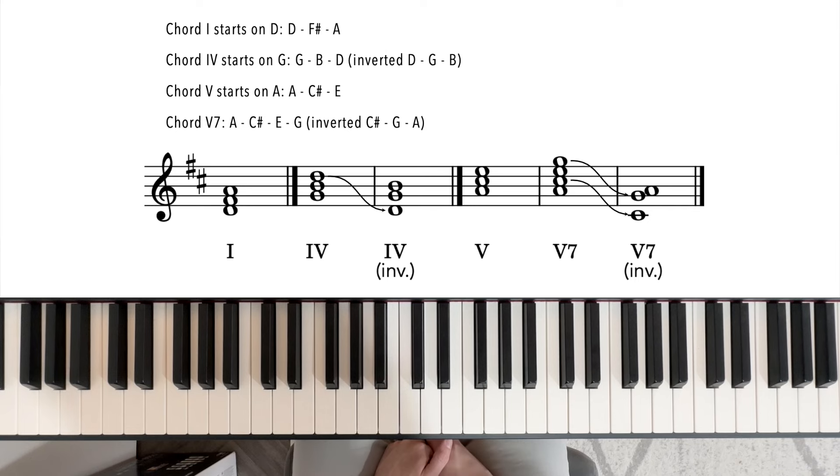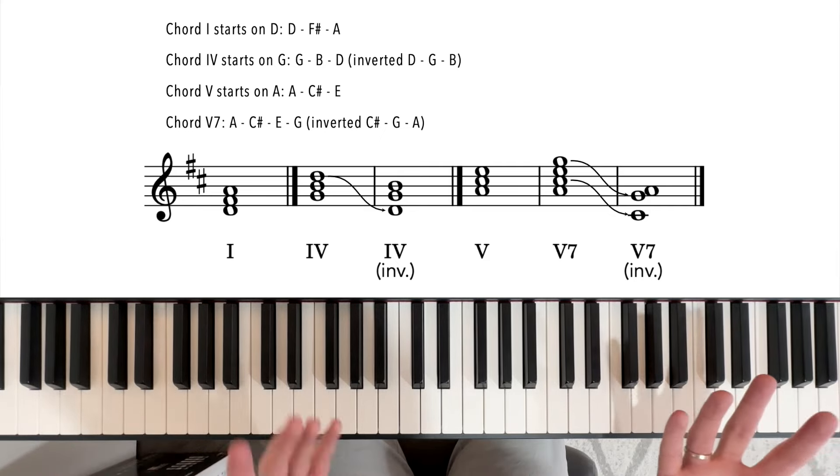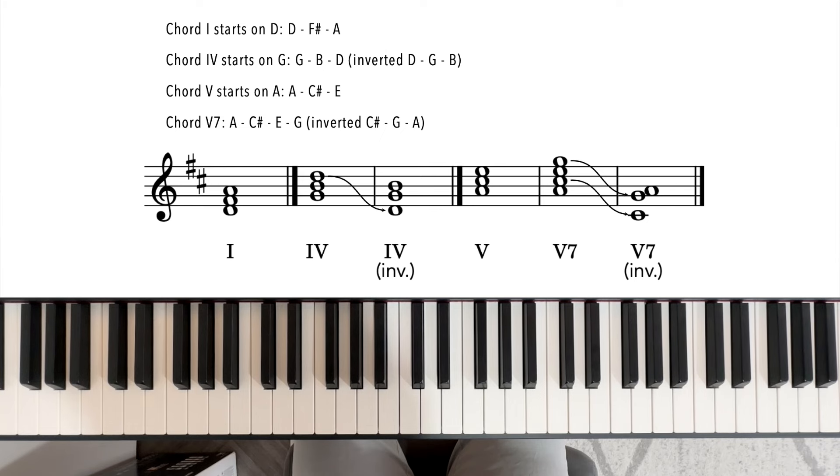Don't forget the new key signature. In D major, we've got the two sharps. So if you see the two sharps at the start of any piece of music, then you need to know that every F and every C in that piece of music is going to be sharp.